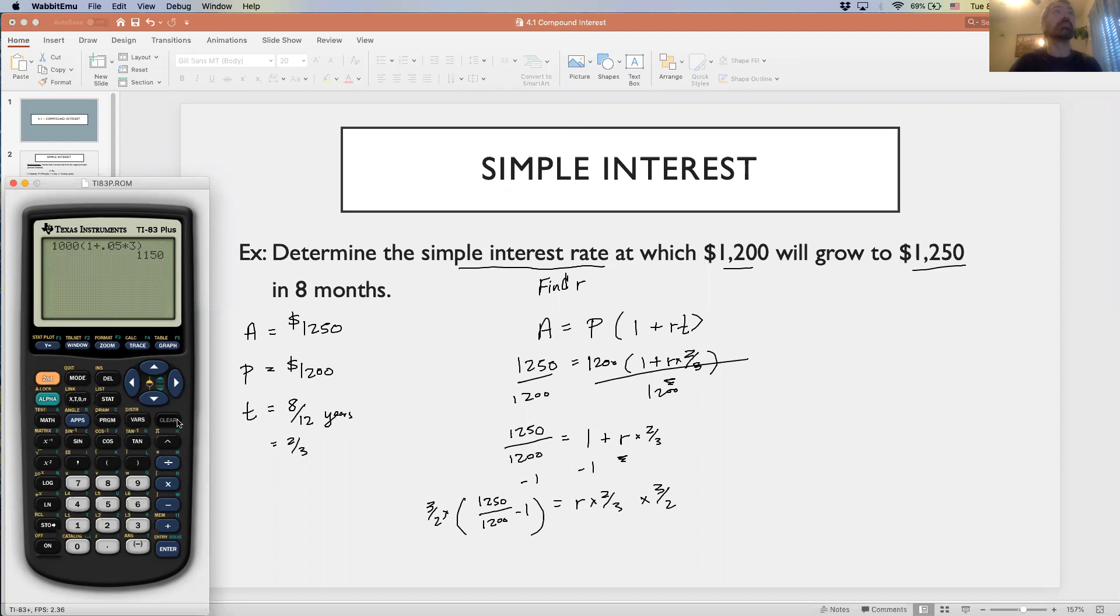In the graphing calculator, we're going to multiply three-halves times 1,250 divided by 1,200 minus 1. Three-halves times, I'm going to use parentheses, 1,250 divided by 1,200 minus 1, close parentheses. This gives me an answer of 0.0625, and that should be the interest rate. My interest rate is 0.0625.